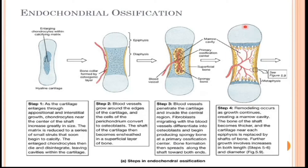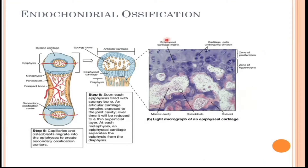These sites are called the secondary ossification centers. Similarly, some cells from the epiphyseal area of the hyaline cartilage increase in size and disintegrate. Blood vessels from the perichondrium then invade the secondary ossification center and release mesenchymal cells.